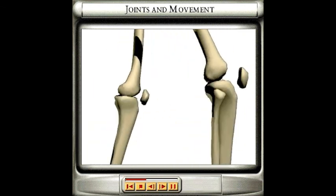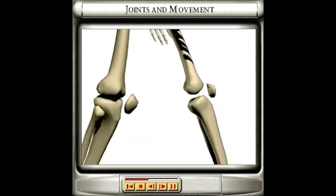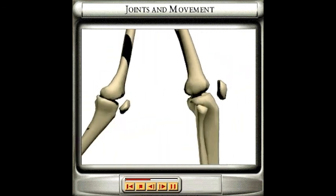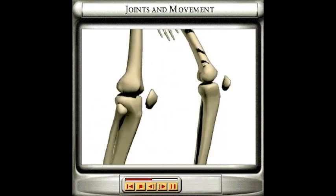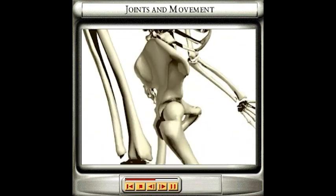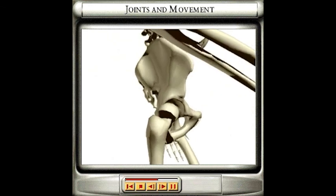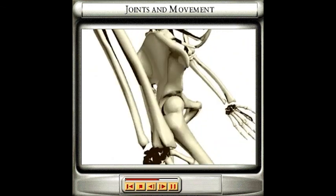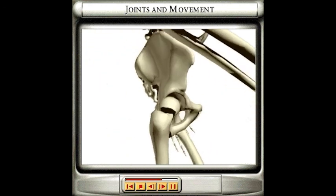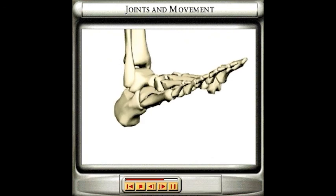Hinge joints, like the knee, the largest joint in your body, allow only forward and backward movement in one direction. Ball and socket joints, like those of the shoulder and hip, allow greater freedom of movement as one bone rotates inside the socket formed by the other.